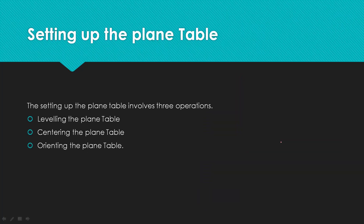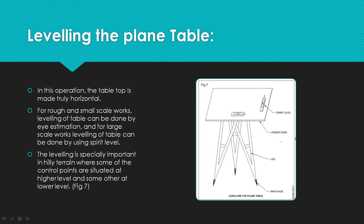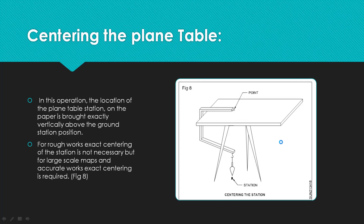Setting up the plane table involves three steps: leveling, centering, and orienting. First is leveling — the table top should be fully horizontal. We use control points for this. Centering is next — we align correctly and fix with an arrow click.